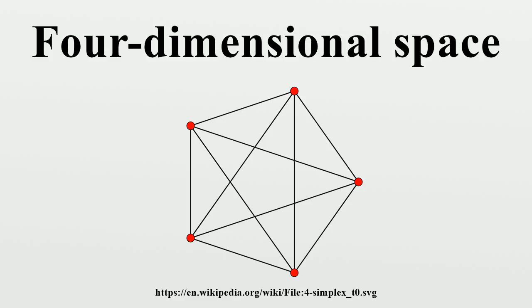Comparatively, four-dimensional space has an extra coordinate axis, orthogonal to the other three, which is usually labeled W. To describe the two additional cardinal directions, Charles Howard Hinton coined the terms ana and kata, from the Greek words meaning up toward and down from, respectively. A position along the W axis can be called spissitude, as coined by Henry More.